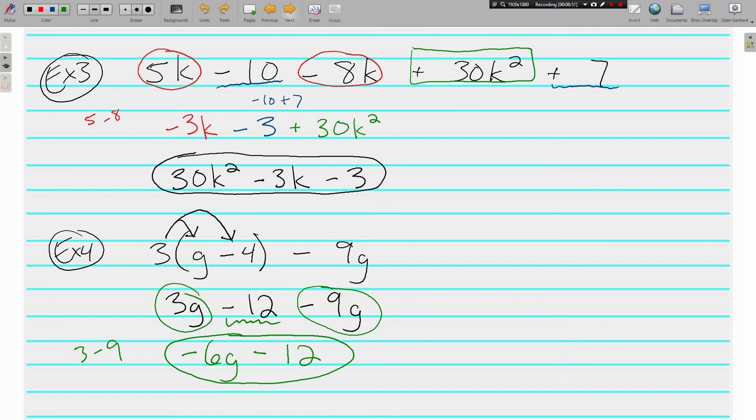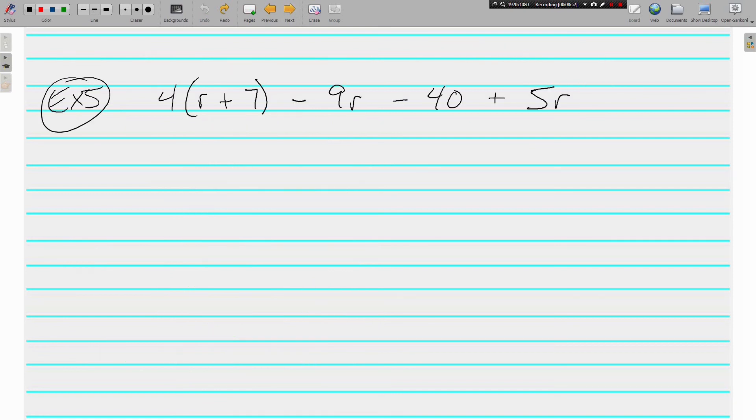One more example. Another one with distributive property. We're going to do 4 times r is 4r. And we're going to do 4 times 7 is a positive 28. Everything else stays the same. I'm not going to try and do too many steps at once. Now I've got five different terms. Ready to combine those. Looks like I've got a 4r, negative 9r, and a 5r. Those all have same variable raised to the same power.